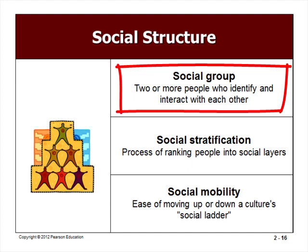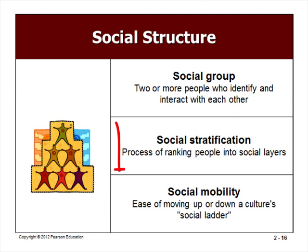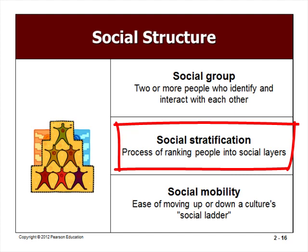Gender refers to socially learned traits associated with and expected of men or women. Sociologists regard gender as a category of people who share some status. Countries vary regarding gender equality at work. Social stratification is the process of ranking people into social layers according to family heritage, income, and occupation.